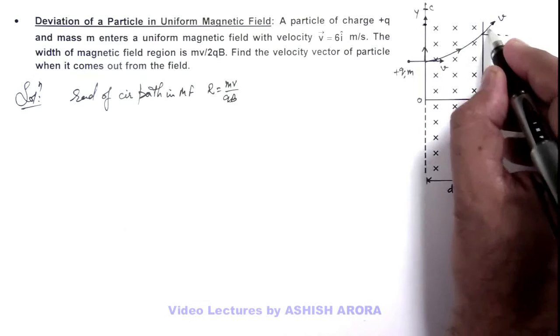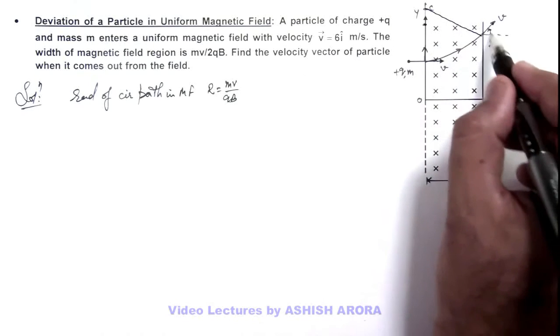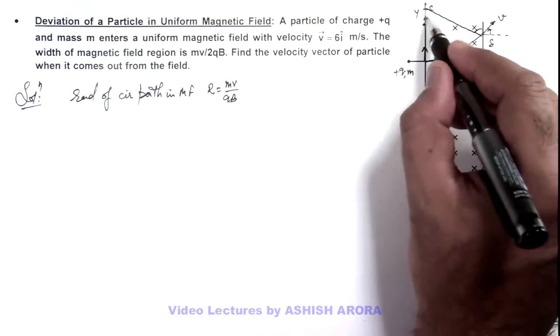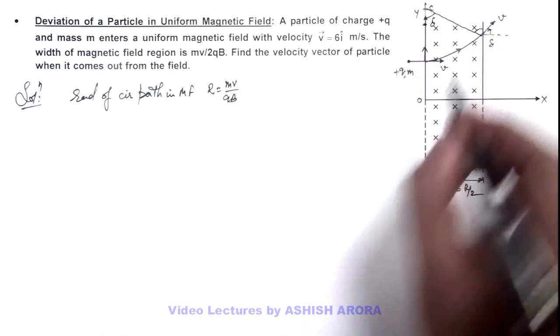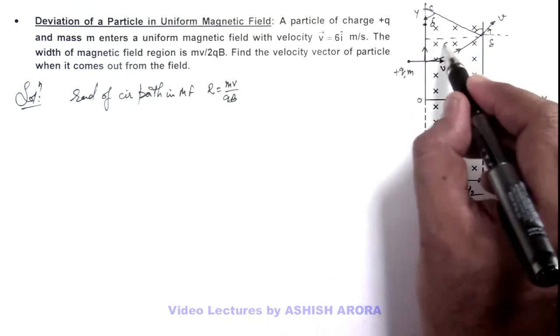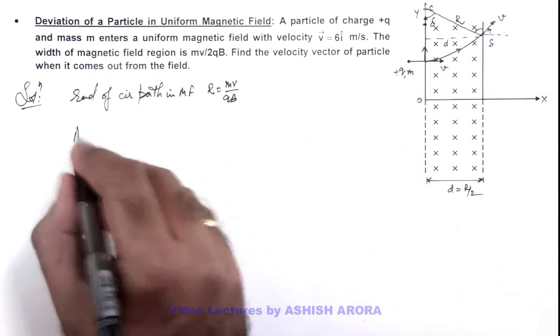But it is deviated by an angle of deviation δ. So if this angle is δ, this is also δ, here is also the angle δ. So if this width is d, radius is r, you can directly write the angle of deviation.